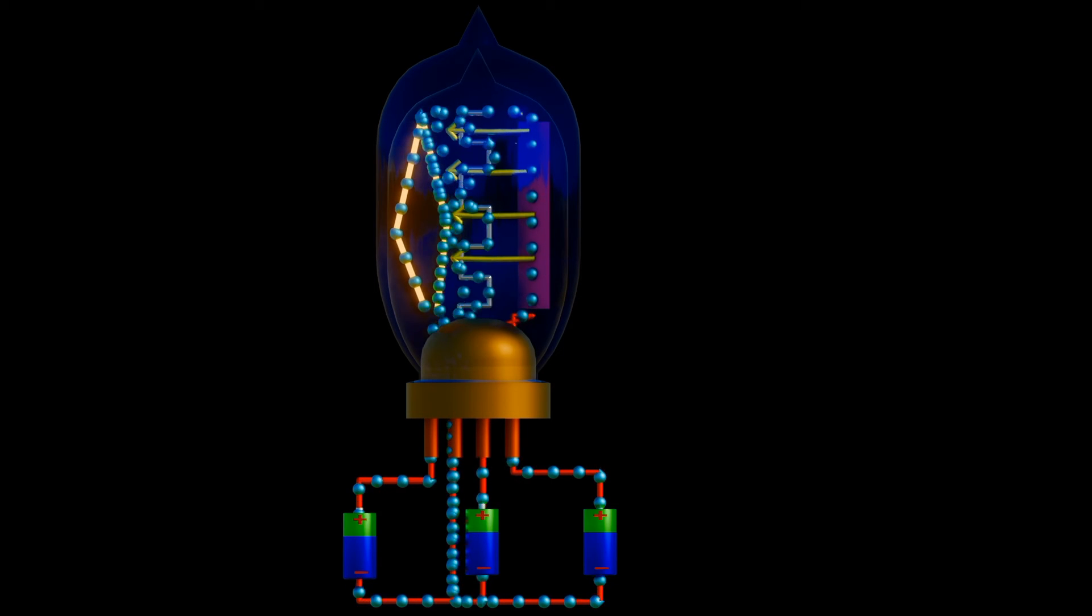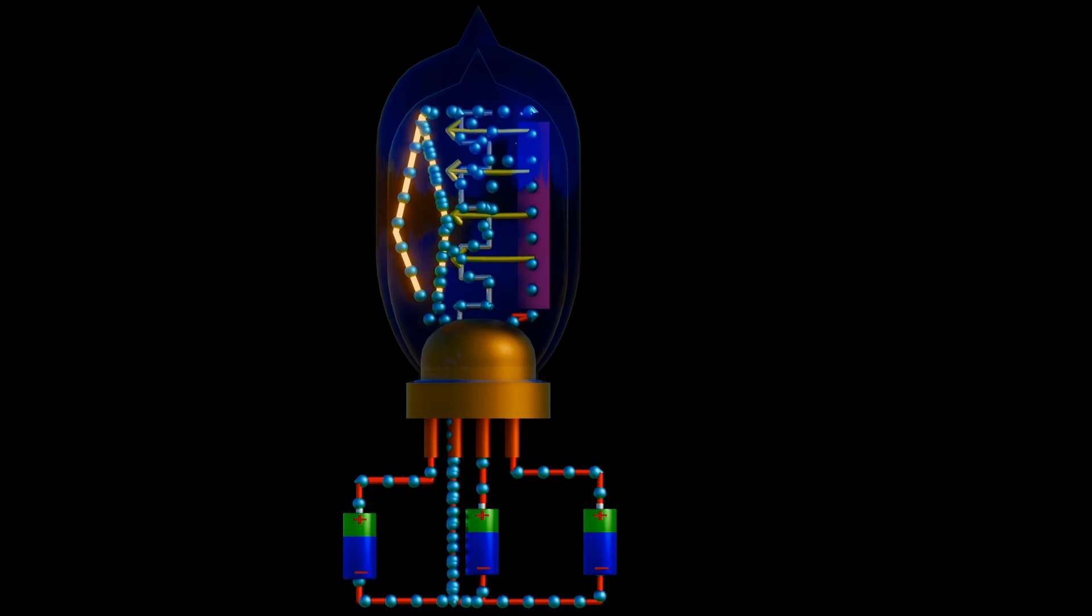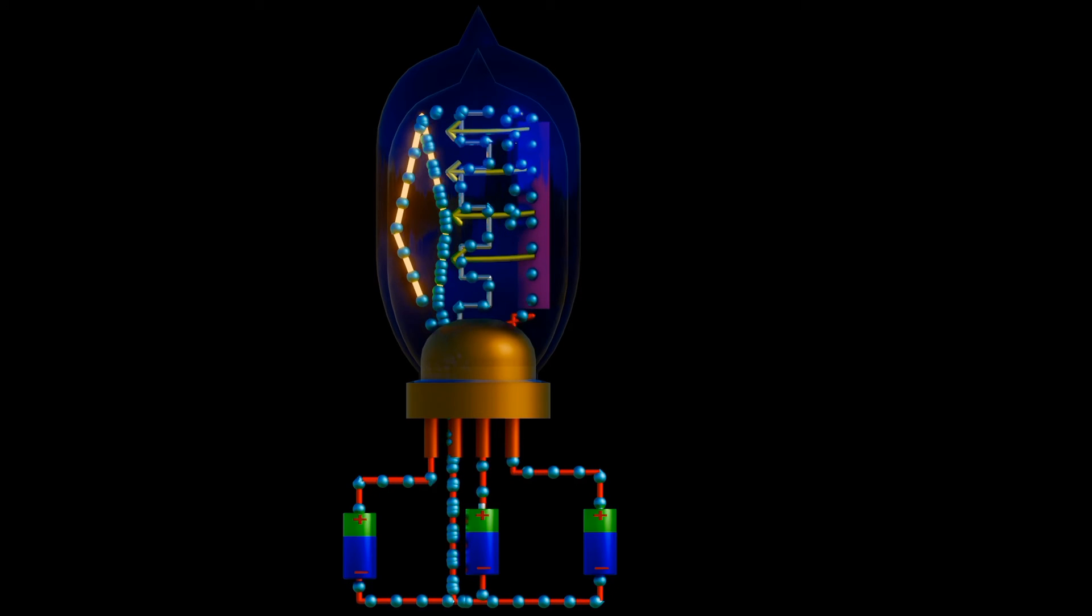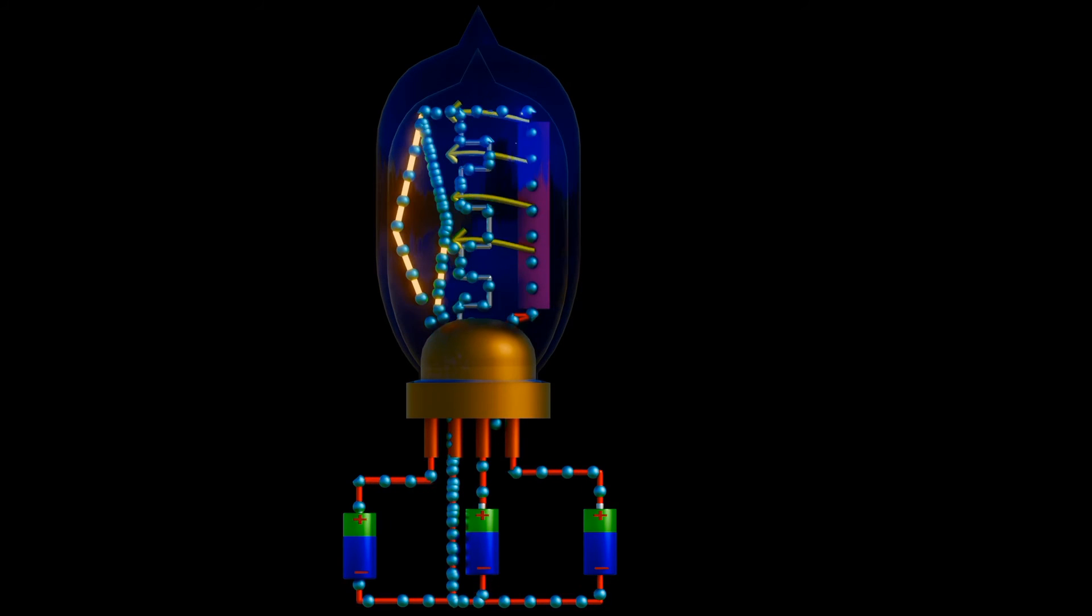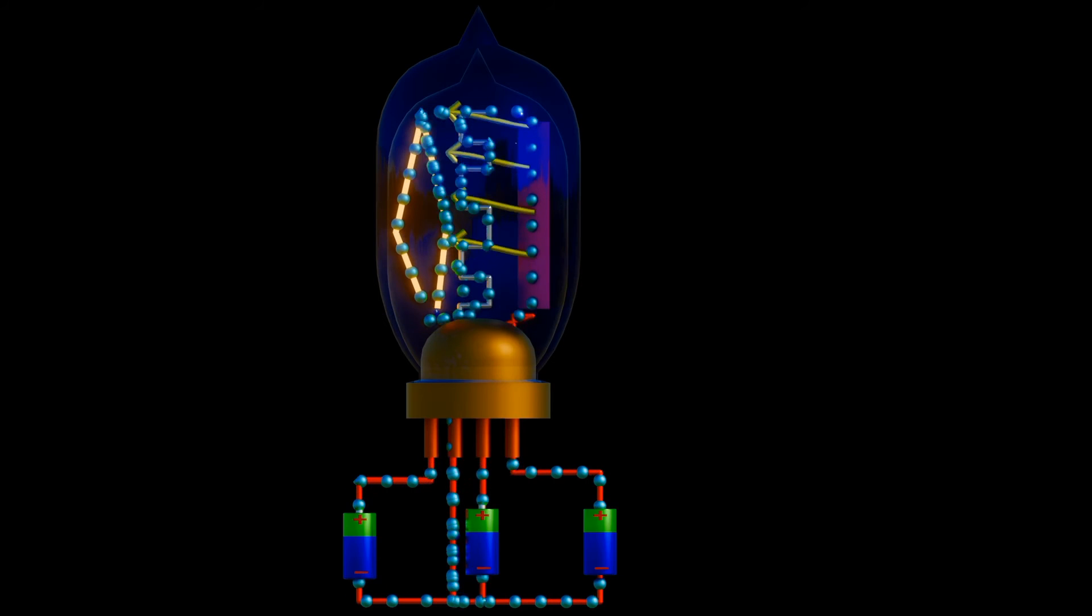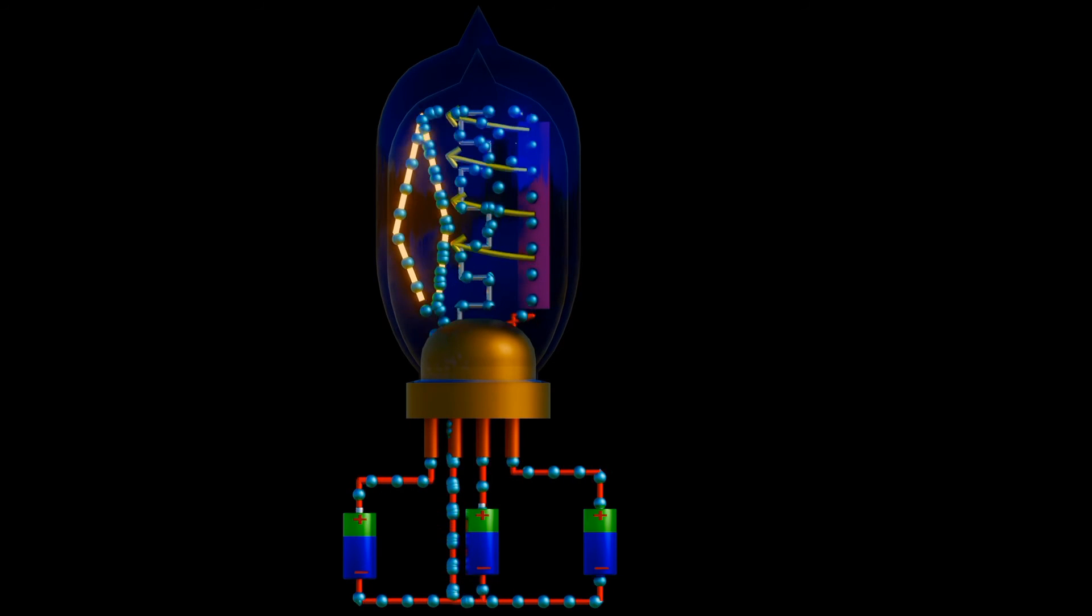When the tubes are used for amplifiers, they are typically operated in the region between cutoff and saturation. However, for logic circuits, we want these tubes definitely on or off. So we operate them firmly in cutoff or saturation.